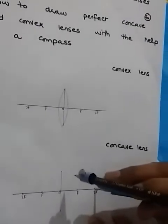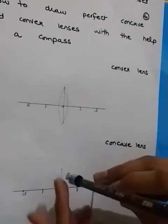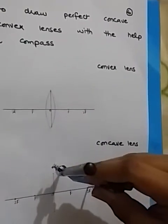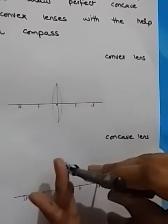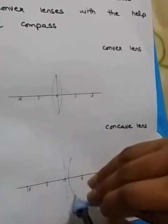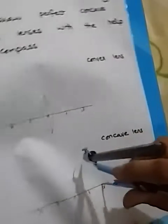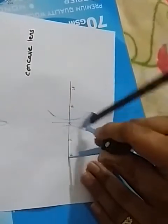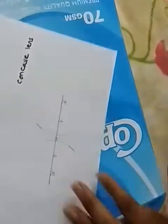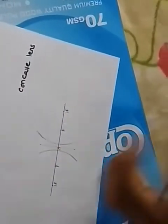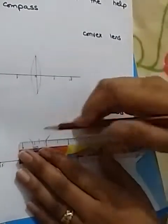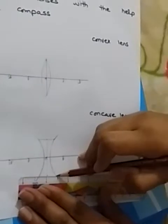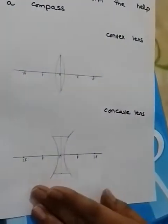Now at 2f I'm going to adjust my compass so that I can get a perfect concave lens. Now I'm going to rub the extra lines.